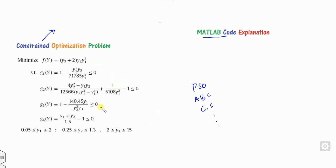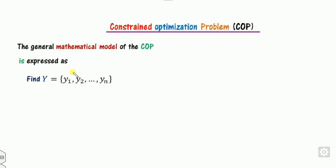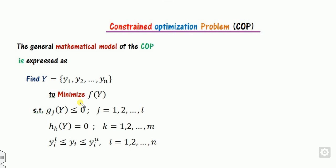This problem is called a constraint optimization problem because it has one objective function and several constraints. The goal is to find the optimal values y1, y2, and y3 that not only minimize the function f but simultaneously satisfy all four constraints. The role of the COP is to find the decision variable y which will either minimize or maximize — in this task I will focus on minimization.